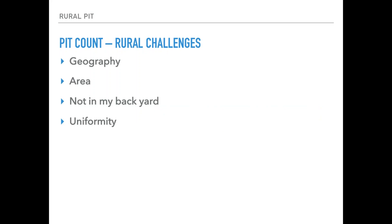When you tackle an unsheltered count, there are unique challenges that rural communities face centered around geography. In West Virginia, our landscape is predominantly rural countryside and wooded areas, making finding people very difficult — sometimes impossible. Our COC covers 44 counties, taking about four hours to traverse from top to bottom, so covering the entire COC in one night is not really possible. A lot of people don't believe there are homeless people in their communities because they're invisible — living in abandoned buildings, under bridges, out of sight — making both serving people and reducing stigma very challenging. The needs and programs vary so much from county to county, making data collection in a uniform way very difficult.